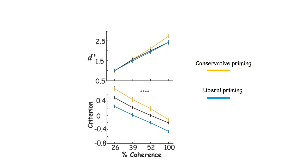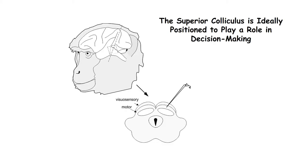We found that manipulating coherence resulted in changes in D' and criterion, but that the sensory motor priming produced changes in criterion exclusively. We then asked whether the superior colliculus, a midbrain structure known to be involved in attention and decision making, contains signals associated with these changes in decision criteria.